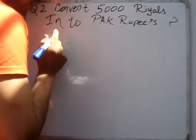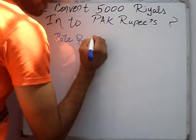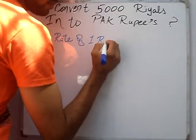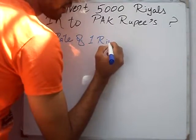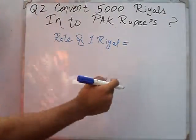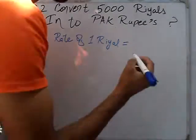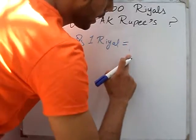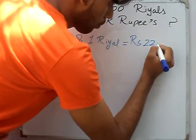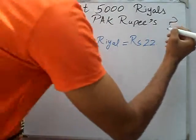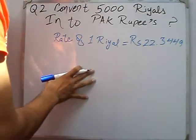Rate of 1 riyal — buying rate — 1 riyal equals RS 22.3449. This is the buying rate.